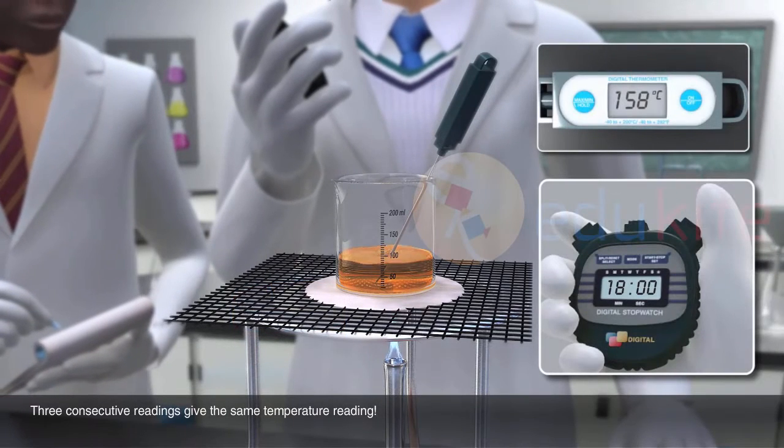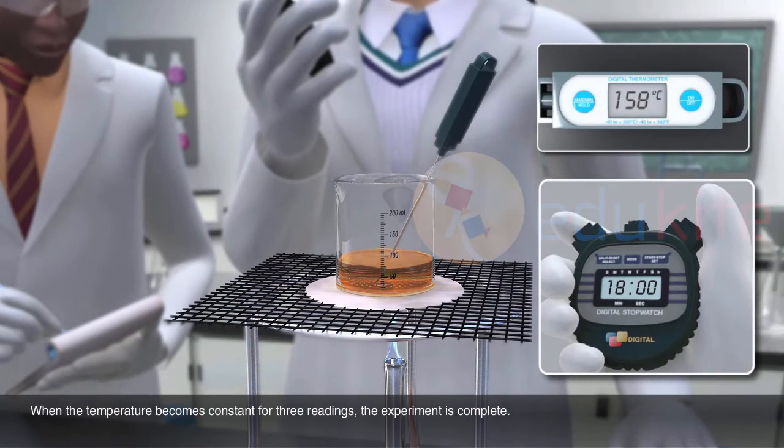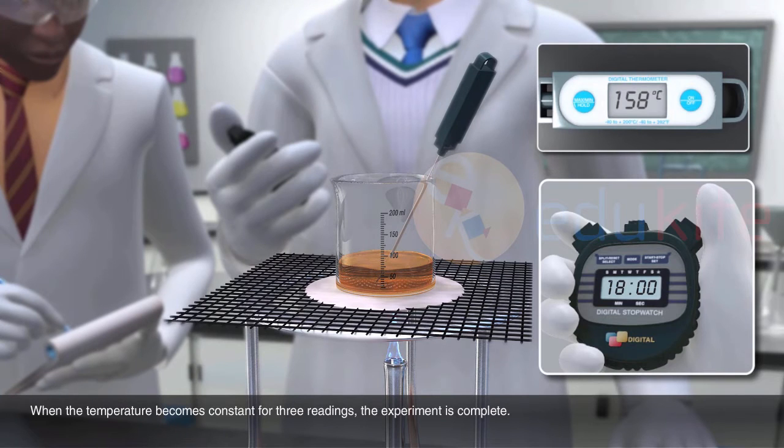Three consecutive readings give the same temperature reading. When the temperature becomes constant for three readings, the experiment is complete. The apple juice has almost boiled off.